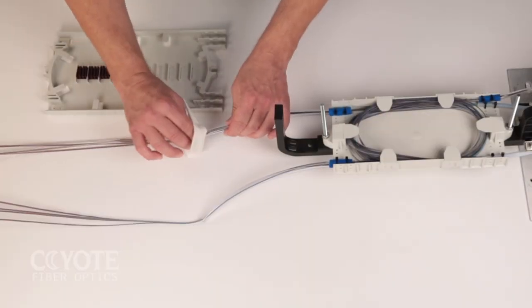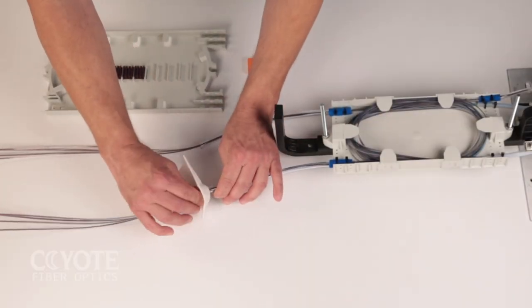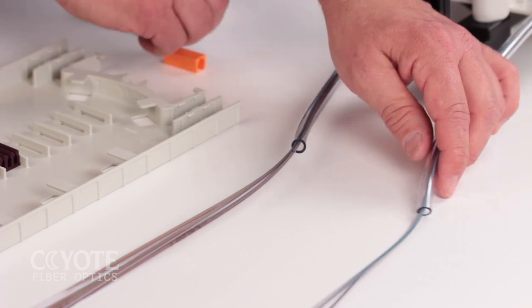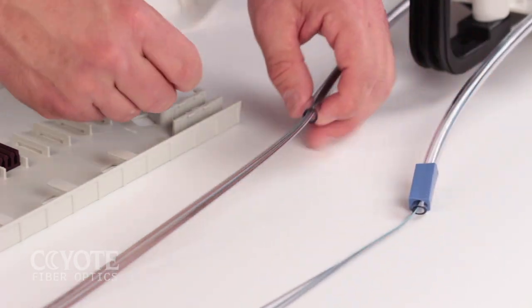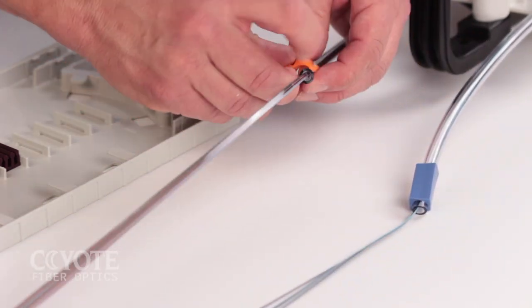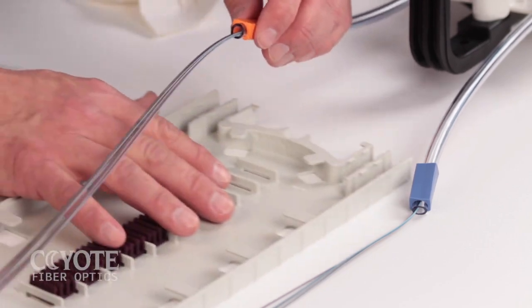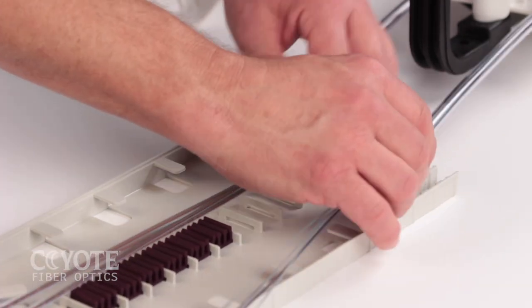Clean the ends of the transition tubes with alcohol prior to applying the light grip retention sleeves. Insert the light grip retention sleeves into the outer slots of the splice tray.